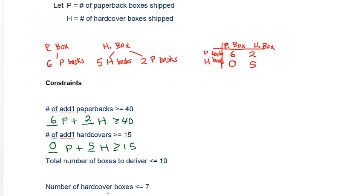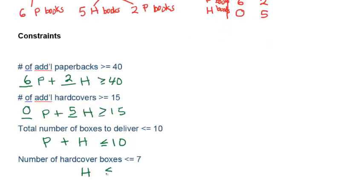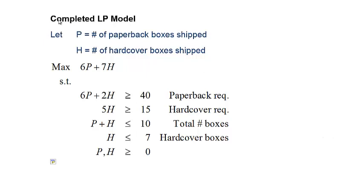The next two constraints are straightforward because they ask about numbers of boxes, not books. Total number of boxes to ship is just p plus h, less than or equal to 10. And the number of hardcover boxes is simply the variable h, less than or equal to 7. Here is the complete linear programming model.